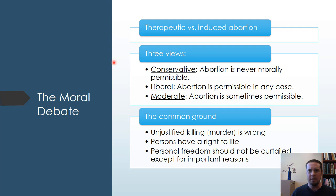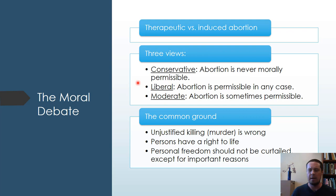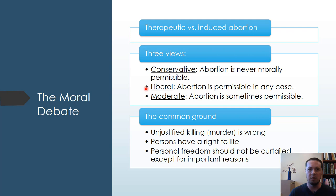There are three basic views on abortion: conservative, liberal, and moderate. The conservative view says abortion is never morally permissible, though there is some wiggle room — for example, a conservative may still permit therapeutic abortion. The liberal says abortion is permissible in any case. The moderate says abortion is sometimes permissible. These are simplified positions, but they're helpful for understanding the basic arguments before they become more complex.